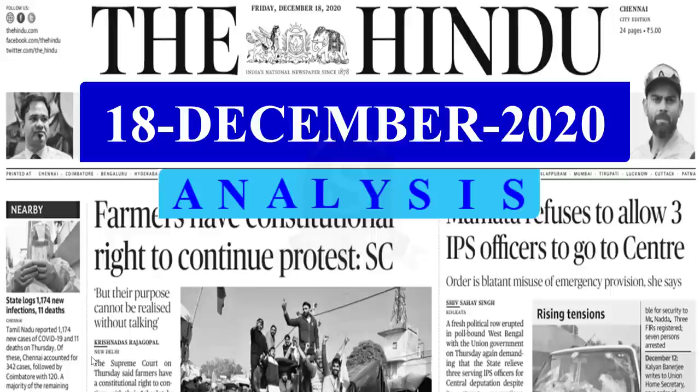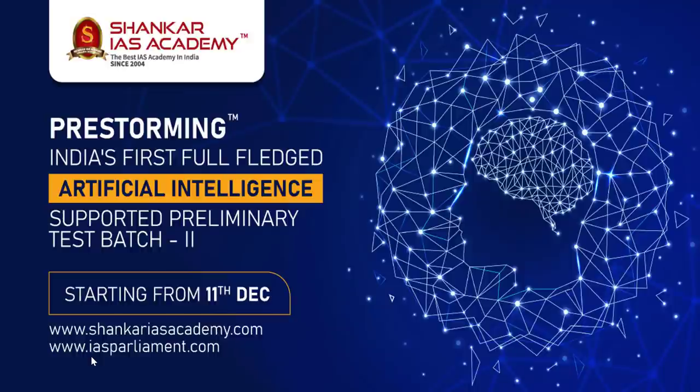Very good evening to all our friends and welcome to the Hindu news analysis of Shankar IAS Academy for the date 18th December 2020. We are happy to inform you that the second test batch of pre-storming 2021 program has started from 11th December 2020. It is the prelims test series for the upcoming UPSC preliminary examination 2021. Our pre-storming program is India's first full-fledged artificial intelligence supported preliminary test series.